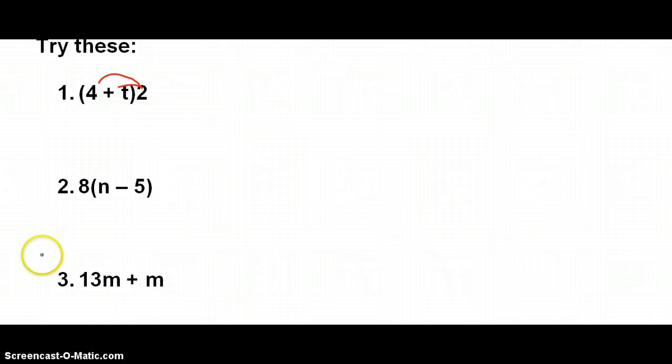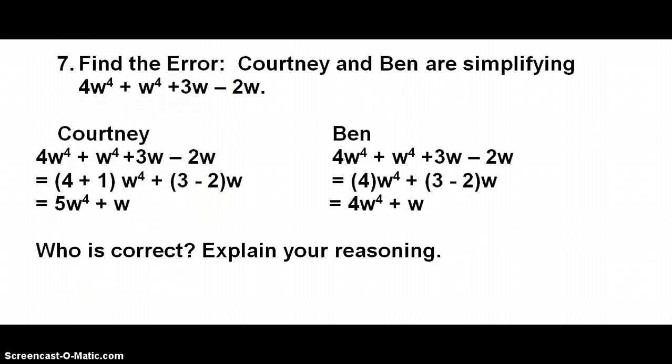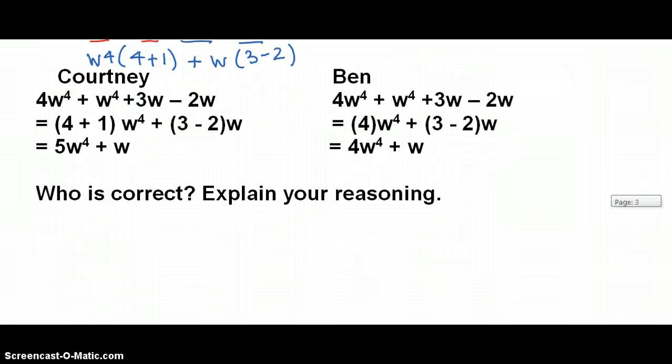I want you to try these. Remember, you're going to distribute the 2 to everything inside parentheses. Distribute the 8. Here, we want you to combine like terms. Continue working until you get to the back. Let's talk about number 7 together. You're looking for the error. Courtney and Ben are both simplifying this problem. And, I need you to look at Courtney's work and look at Ben's work and see if you can determine who is correct. Now, remember, we're trying to combine like terms. So, check to see whose work you agree with. What I always like to do is take the problem and work it myself first. Here, I see two W4s. Here, I see two plain old Ws. So, I would probably bring out the W4. And, that's going to be 4 plus 1 plus. Bring out the W. And, you'll have 3 minus 2. Oh, that ought to get you started. And, see if you can find out who was right and who was wrong. We'll talk about it tomorrow. Be sure you explain your reasoning.